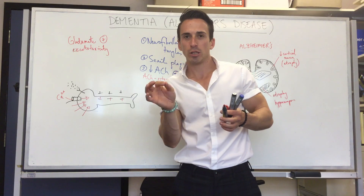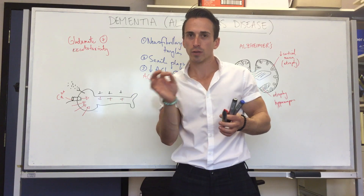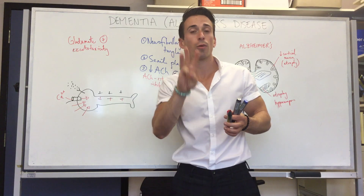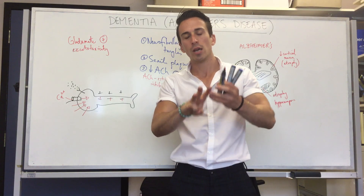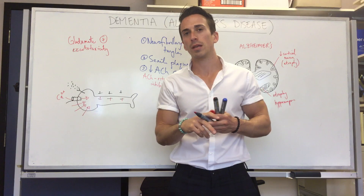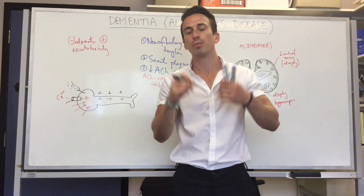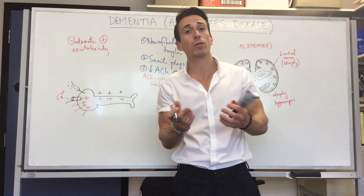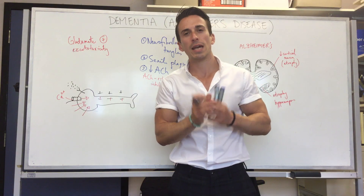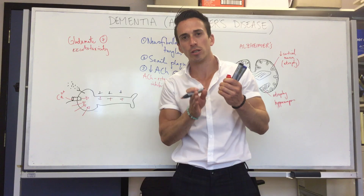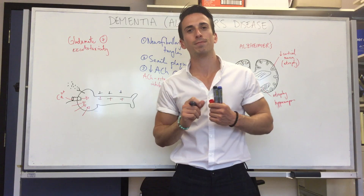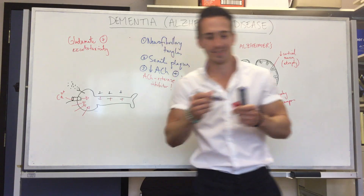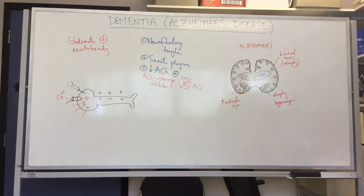There are three major stages of dementia and Alzheimer's disease which won't be covered in this video as it would be too long. Please refer back to your lecture notes and review the stages of dementia.